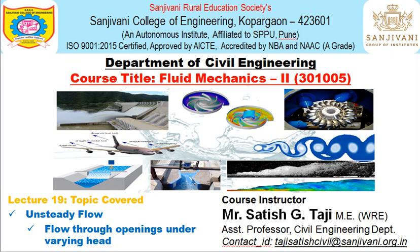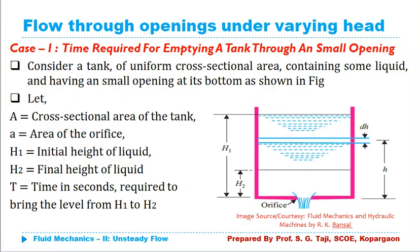We are going to consider a condition: flow through openings under varying head. We will consider the condition where flow takes place through a small opening, and we are going to consider the variable head. As the head is going to vary, obviously the flow will be unsteady because flow characteristics are going to change.